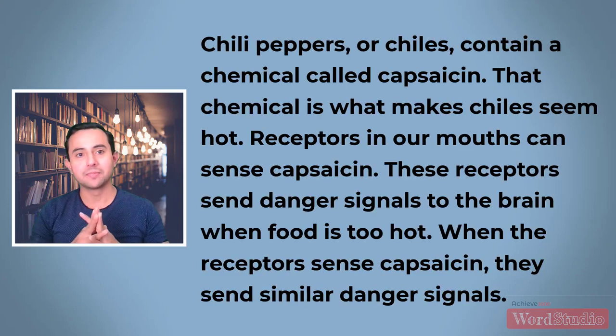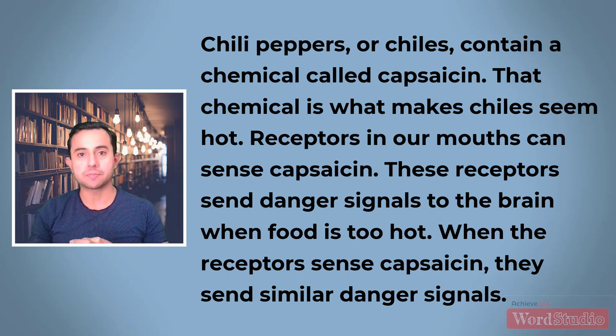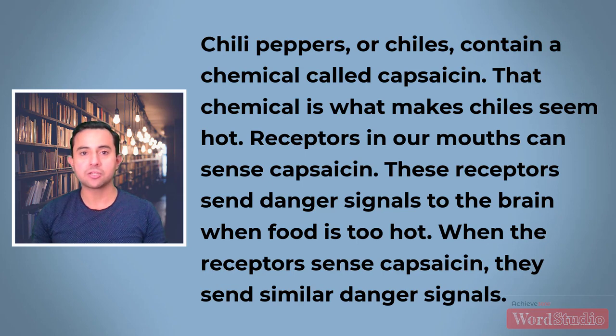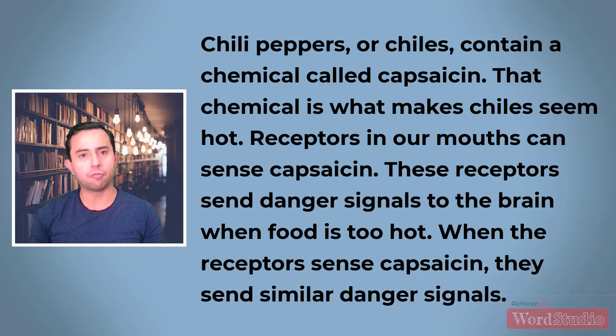How did that go? Did you write a strong summary? Let's look at mine together. Chili peppers, or chilies, contain a chemical called capsaicin. That chemical is what makes chilies seem hot. Receptors in our mouths can sense capsaicin. These receptors send danger signals to the brain when food is too hot. When the receptors sense capsaicin, they send similar danger signals. My summary is shorter than the passage and contains only the most important ideas and keywords. I left out the detail about the pizza because it was used as an example, and therefore it didn't seem essential to me. Your summary probably looked a little different from mine, and that's okay — as long as your summary is short and focused and contains only essential ideas from the passage.